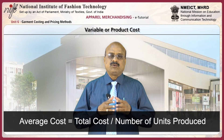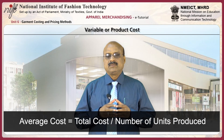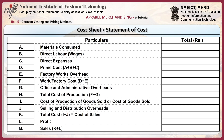Average cost is the total cost divided by number of units produced. The particulars of a cost sheet include direct materials, direct labour, and other direct expenses. Prime costs plus work overheads — for example, administrative overheads, factory overheads, etc. The total cost as well as the cost per unit of each of these should be calculated.